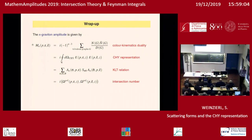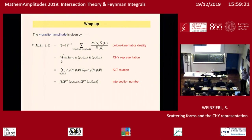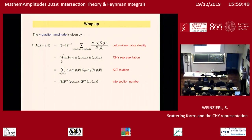Question about the one-loop CHY formalism: Can one do a similar intersection number computation on the torus to get one-loop amplitudes? The speaker notes they did not work on that subject, but mentions that Yvonne Geyer, Ricardo Monteiro, and collaborators have papers on one-loop generalizations of the CHY formulas. A further generalization to the intersection number picture is likely possible but has not been done.